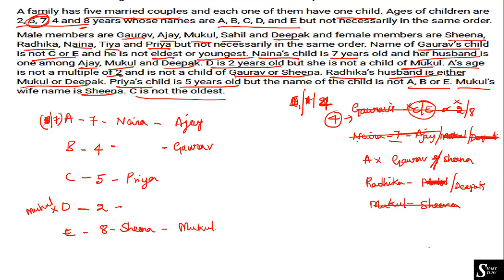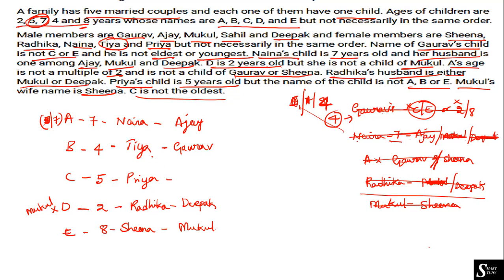Radhika and Deepak are placed for D since they cannot be substituted anywhere else. The only female left unplaced is Tia, who must be the wife of Gaurav. The only male left is Sahil, who is substituted for the remaining position. The full arrangement is now complete.